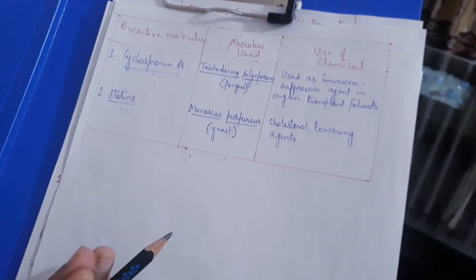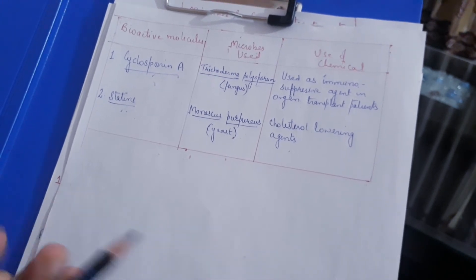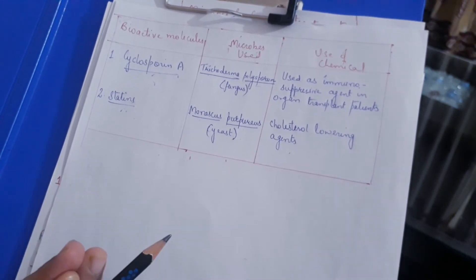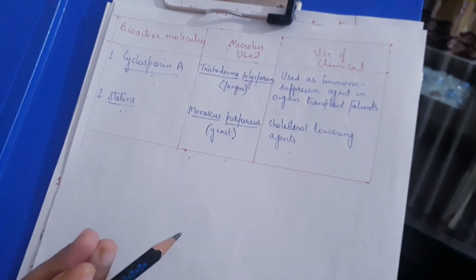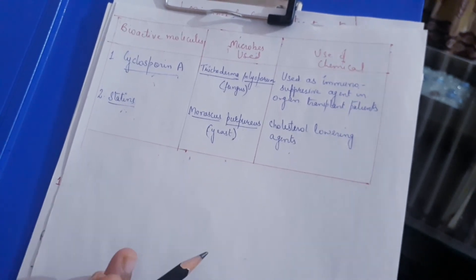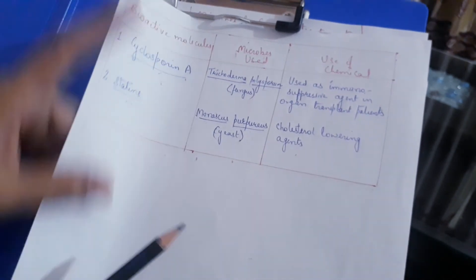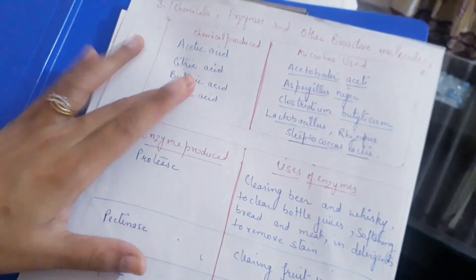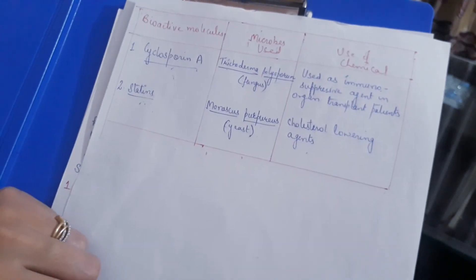So today we discussed how microbes can be used for production of industrial products. We covered alcoholic beverages with their reactions, antibiotics with the specific example of penicillin, and third — chemicals, enzymes like streptokinase, and bioactive molecules like cyclosporin A and statins that are produced by microorganisms.